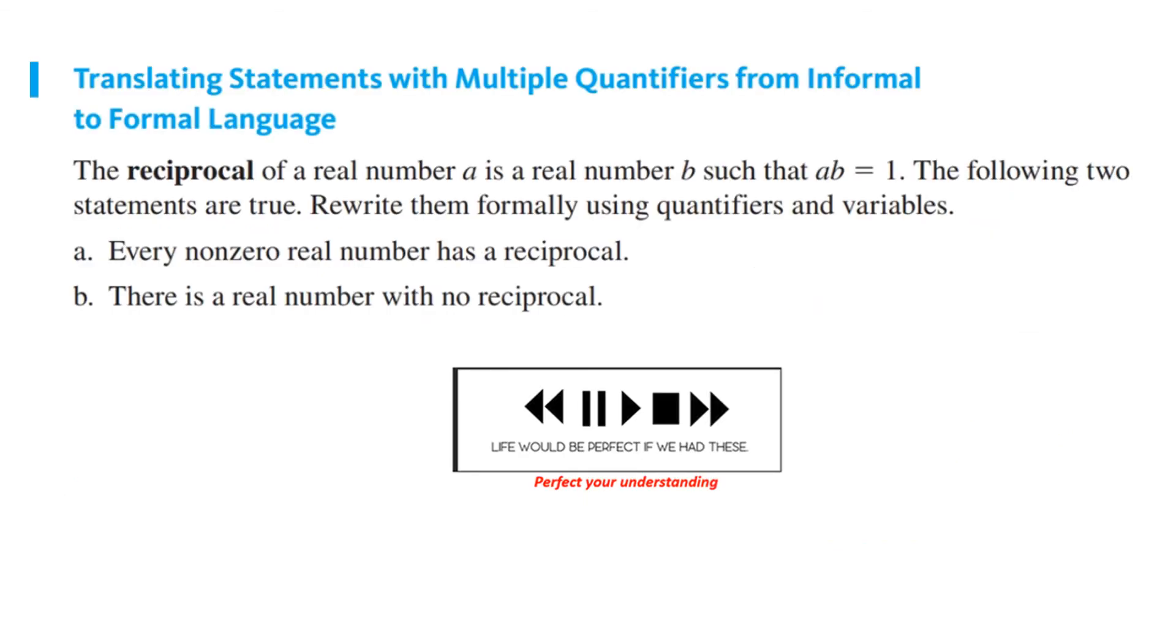Here's another application. You're to translate multiple quantifiers from informal to formal language. This time, you're to write the symbols. The reciprocal of a real number is that number that you multiply by the number to get one. The following statements are true. Rewrite them formally using quantifiers and variables. You have two of them to do. Every non-zero real number has a reciprocal. There is a real number with no reciprocal. You know what to do.